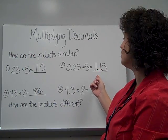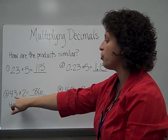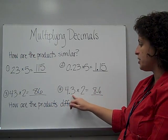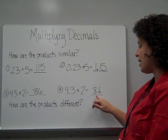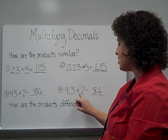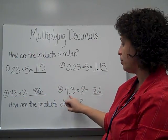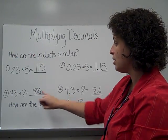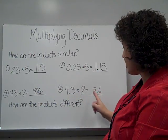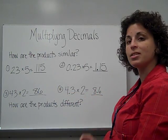The reason that this one has a decimal is because there was a decimal in the problem. Look at this one: forty-three times two is eighty-six. Four and three-tenths times two is equal to eight and six-tenths. Again, these problems are similar because they have the same digits. It's not the same number — forty-three versus four and three-tenths — because of that decimal. Both are multiplied by two, and both of their products have an eight and a six. One is a whole number, eighty-six, and the other is eight and six-tenths.